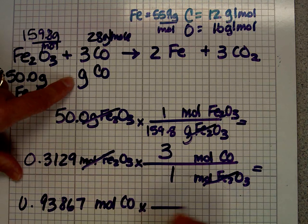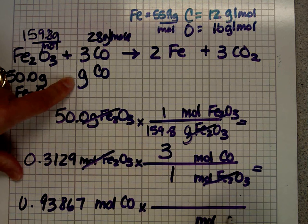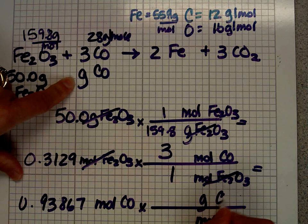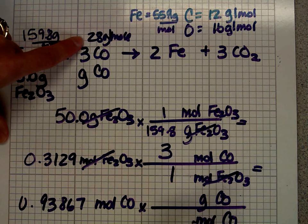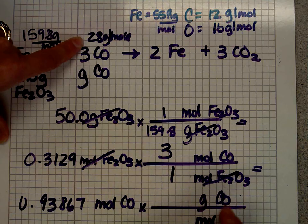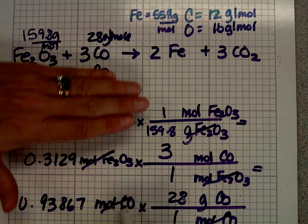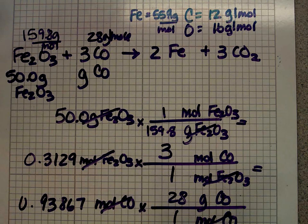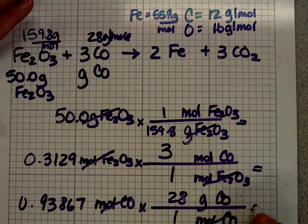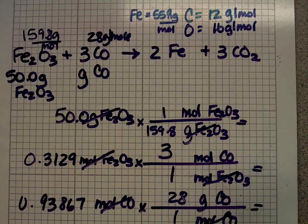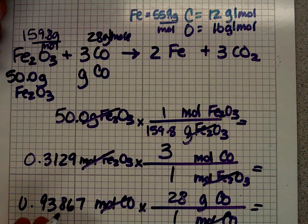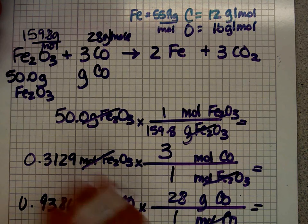But I didn't want moles of CO. I wanted grams of CO. So to go from moles to grams, I use this number up here. Anytime I have moles and grams, I know I'm going to use the periodic table. Anytime I have moles and moles, I'm going to use the equation. Anytime I have moles and liters, I'm going to use 22.4. Those are things that will just get stuck in your head. So I have 0.93867 times 28.